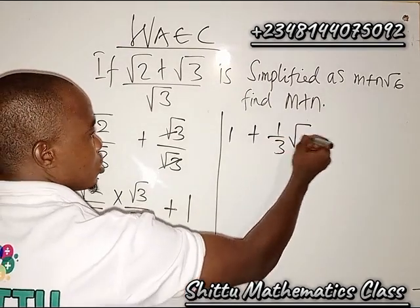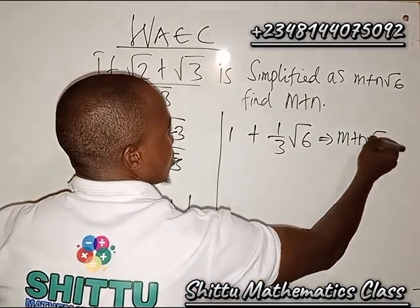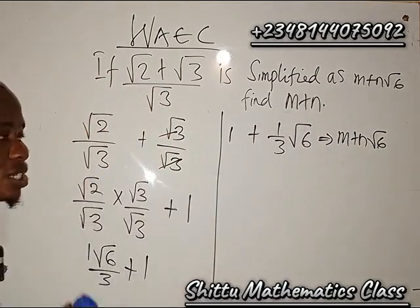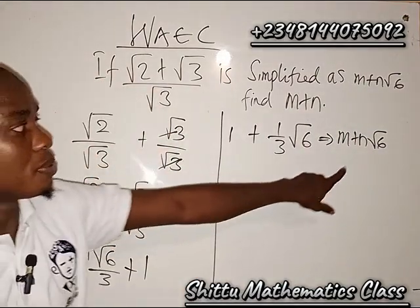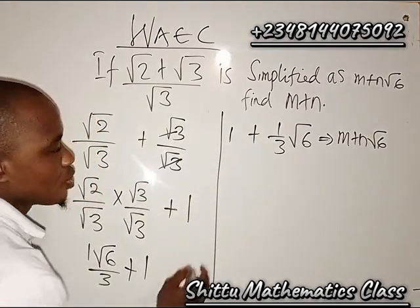So which implies that m plus n root 6, so according to what they said, this is simplified as this. So when you compare this and this together, so now you can see that m equals to 1 and n equals 1 over 3.